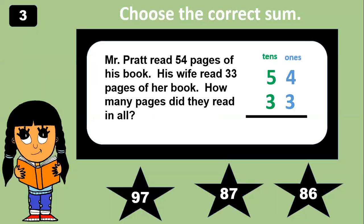Mr. Pratt read 54 pages of his book. His wife read 33 pages of her book. How many pages did they read in all? Step one, add the ones. Step two, add the tens. Did you find the sum? 87. Four plus three equals seven. Five plus three equals eight.